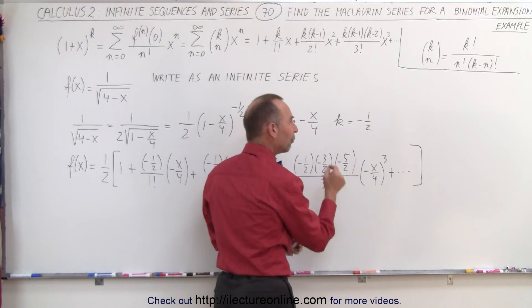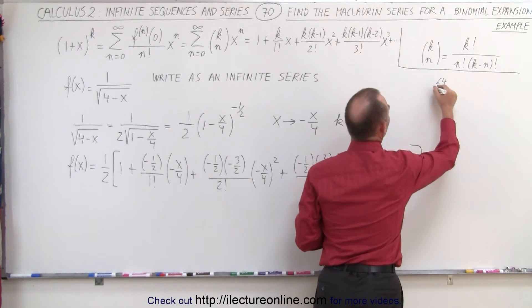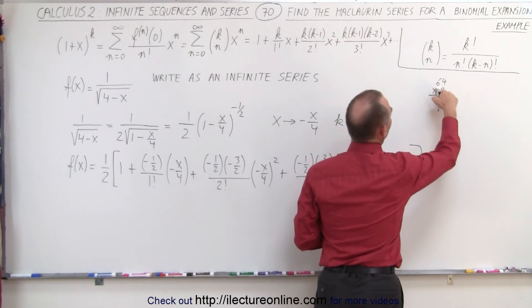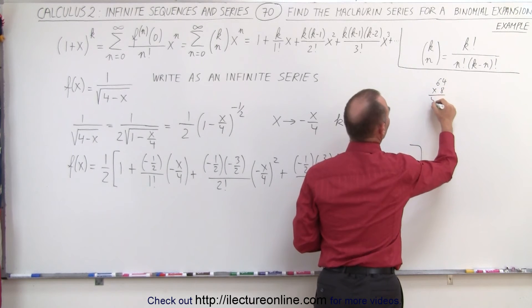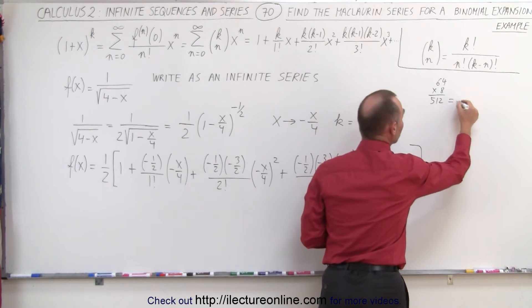It turns out that 512 is 8 cubed. And so we're beginning to see a pattern that in the denominator we have an 8 right here.